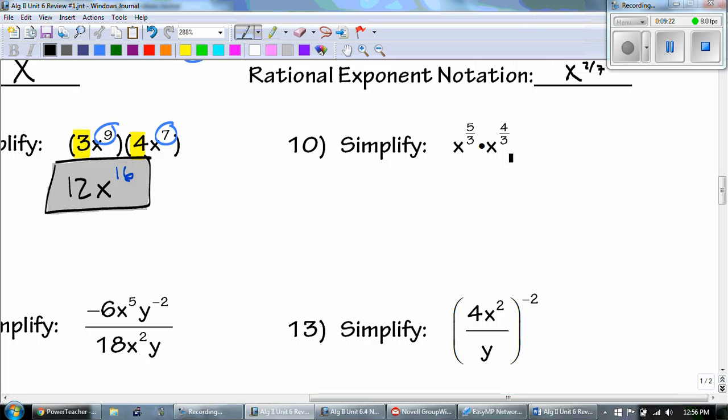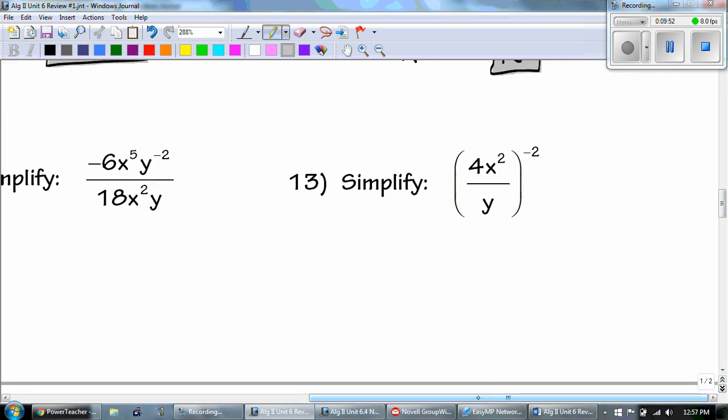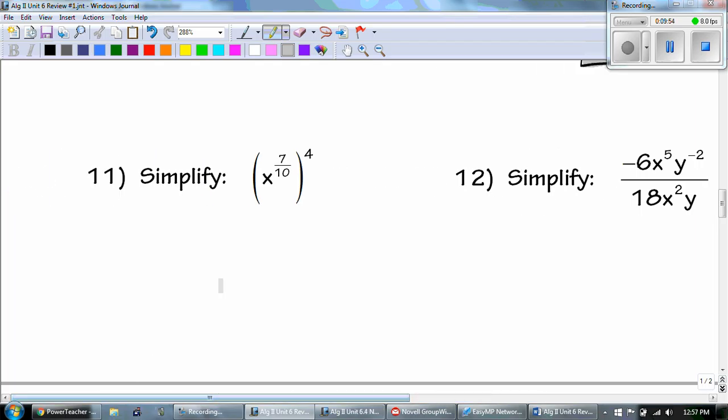Number 10. Once again, I don't have any coefficients, so I can just add. 5 plus 4 is 9. But then I always check, can we simplify this? And it's going to be 9 divided by 3, which is 3.